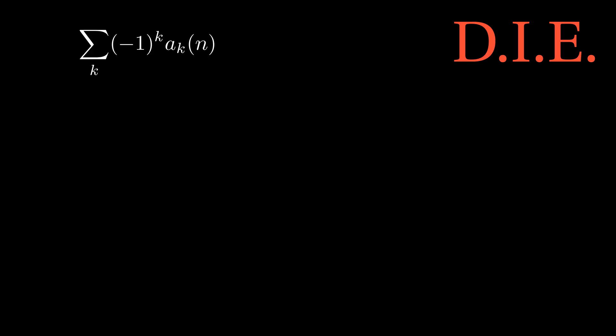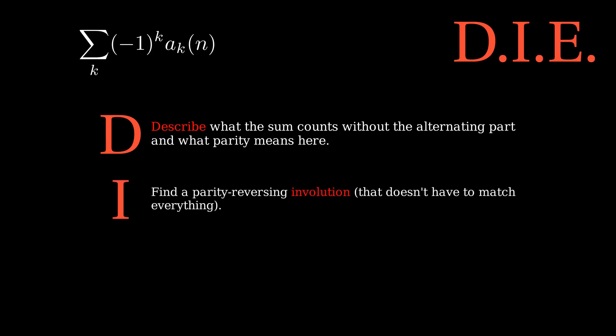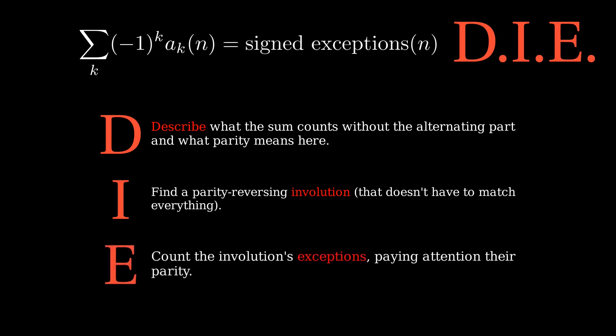It's called DIE because the steps are: D, describing what the sum would mean without the minus 1 to the k term and understanding what parity refers to; I, creating a sign-reversing involution to match configurations to ones with opposite parity; and E, counting up the exceptions, that is where the involution breaks down, paying close attention to the parity of those exceptions. The value of an alternating sum is the number of exceptions times their signs.